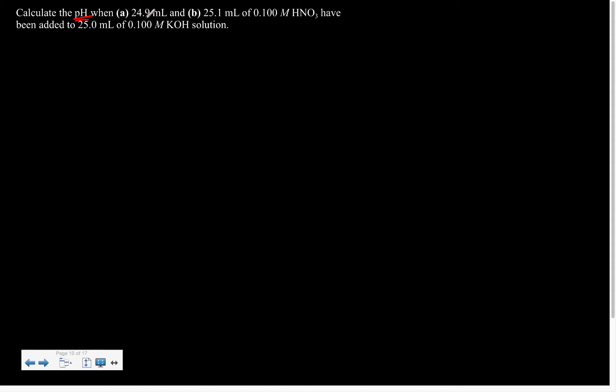Okay, so we're going to solve this problem. We're going to solve for the pH when we take some HNO3 and add it to a solution of potassium hydroxide. So obviously first we'll write our equation.